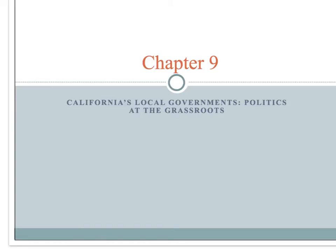Chapter 9 addresses local government, which affects the way we live even more than state government on a day-to-day basis. This chapter introduces the functions and organizations of cities, counties, and other local governments. The process of forming these governments is described along with what they do.